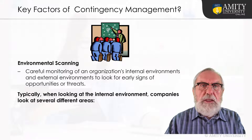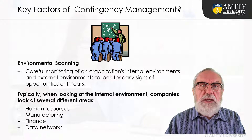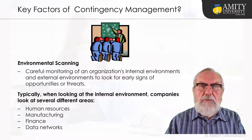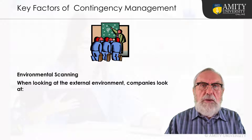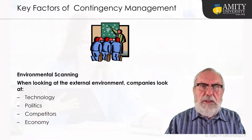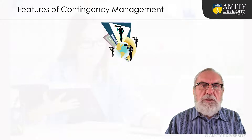When looking at the internal environment, companies examine several different areas: human resources, manufacturing, finance, and data networks. These areas are reviewed for any aspects that might negatively impact the company — for example, what to do if there's a strike or if an important piece of machinery goes down. When looking at the external environment, companies look at technology, politics, competitors, and the economy. If they see an issue that could arise — say, the election of a new president — they will address that possible issue with contingency planning.